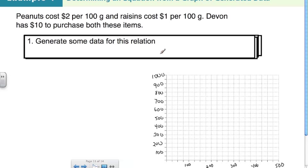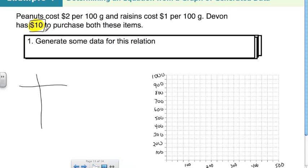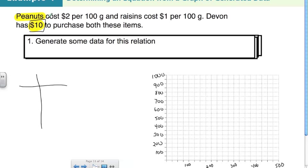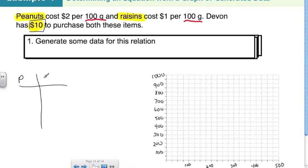I've broken it down into steps. Step one: generate data — that means a table of values. We need to figure out which pieces of information are the variables. The $10 doesn't change, so it's a constant, not a variable. That leaves us with peanuts and raisins — specifically their mass in grams. I'll call peanuts P and raisins R, both measured in grams.